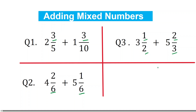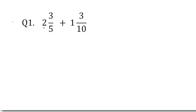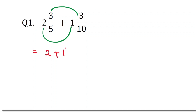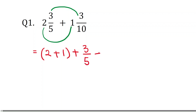Let's solve the problems. While adding mixed numbers, you have to add the whole numbers apart and the fractions apart. That means first add 2 plus 1 — these two are the whole numbers in the mixed numbers — plus 3/5 plus 3/10. Two plus one is three. Now add these two fractions.